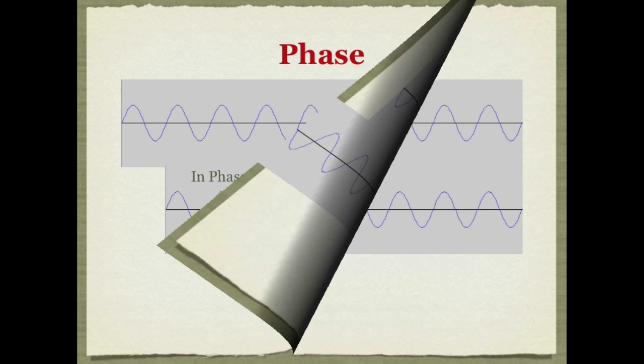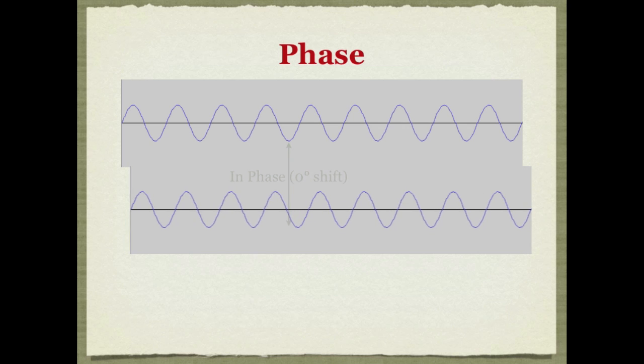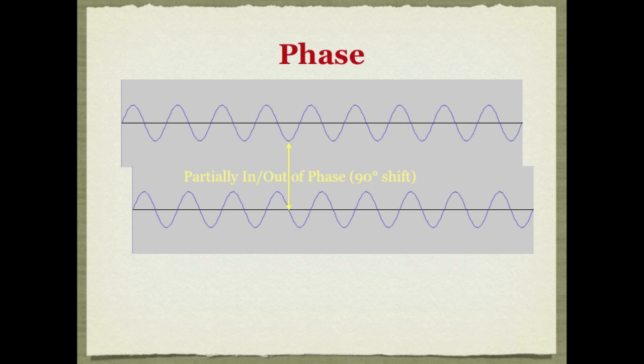But with phase, you can have something partly in phase. Let's look at this. When there's no delay between the two copies of this wave, they're perfectly in phase. But now if we delay it by a quarter of a wave, we get them 90 degrees out of phase, which is partly in phase, partly out of phase.